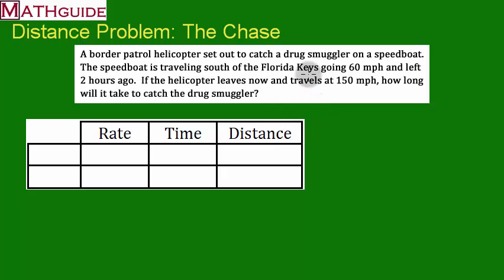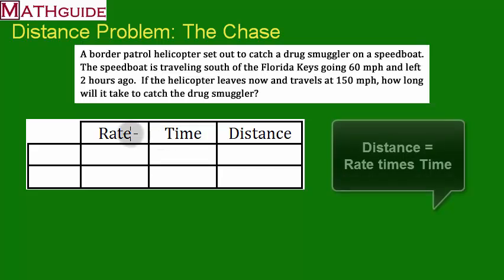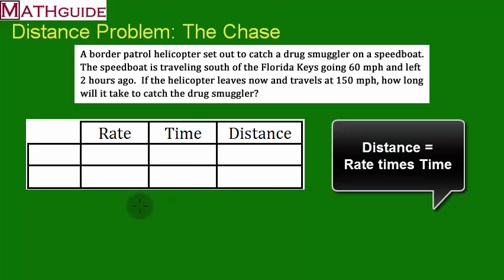We want to solve this problem and make it as simple as possible to understand. I have a table with headings I've chosen carefully: rate, time, and distance. If you know anything about rate, time, and distance, you know that distance is equal to rate times time. That's why I have them in that order — it'll help me organize things.